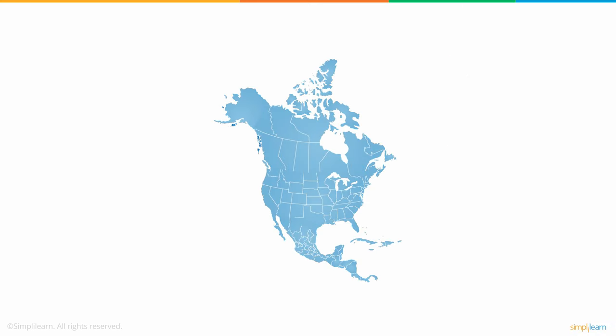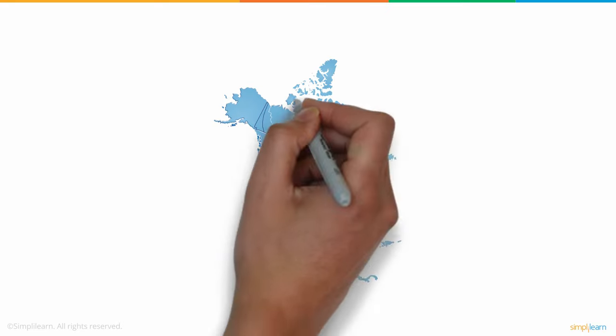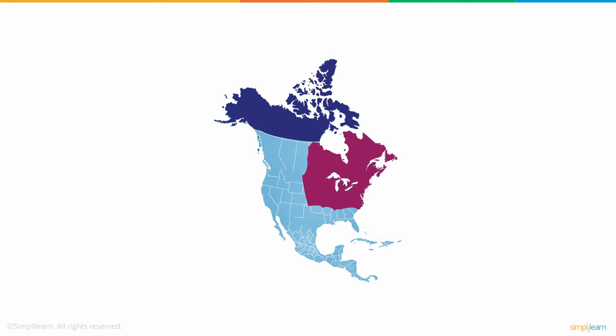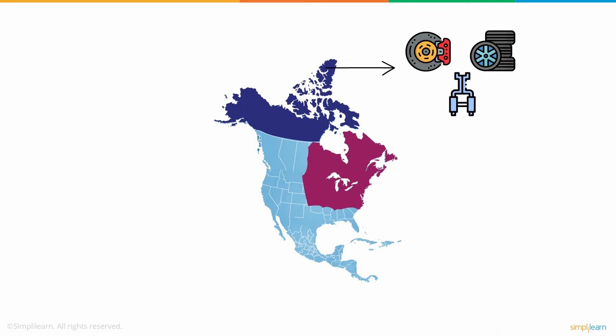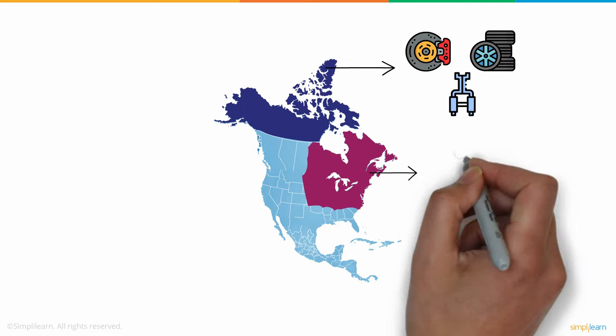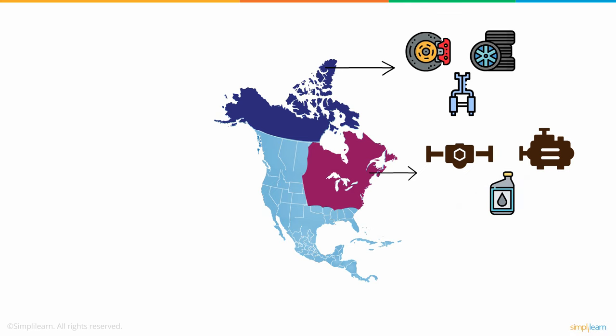Using Tableau's geographic map feature, Ben understood the product demand at a regional level. He found the northern regions were interested in performance kits for their imported sports cars. The eastern regions had good demand for truck parts and lubricants.